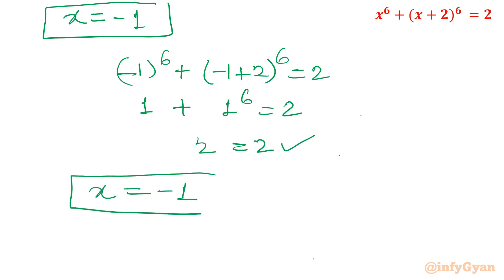So the only real root is x = -1. In terms of the hexic equation there are six solutions: two are x = -1 (repeated), and the remaining four are complex. I hope you liked this video. Thank you so much for watching — don't forget to like, share, and subscribe. Bye!